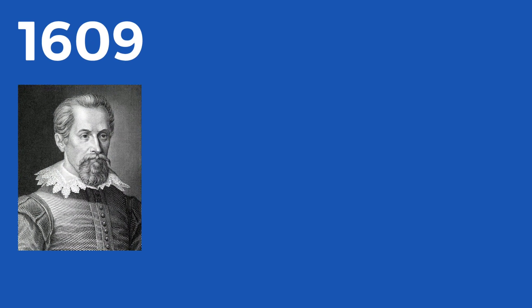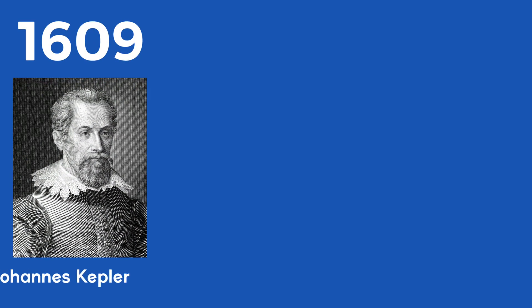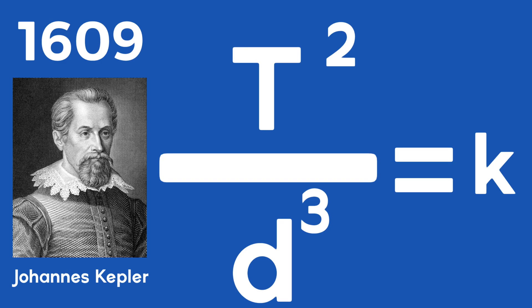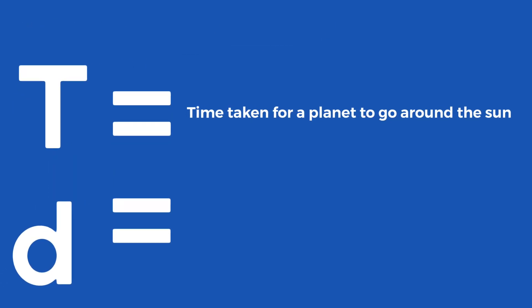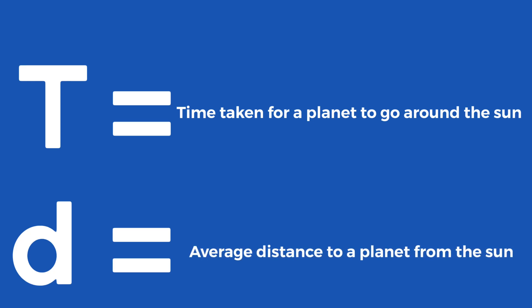In 1609, the German astronomer Johannes Kepler published this equation: T squared divided by d cubed equals k. T stands for the time taken for a planet to go around the sun, and d is the average distance of the planet from the sun. However, k — you don't need to worry about it because we're going to get rid of it in a minute.